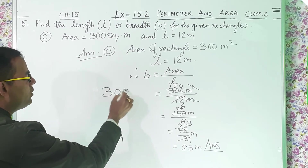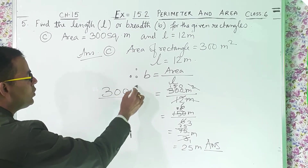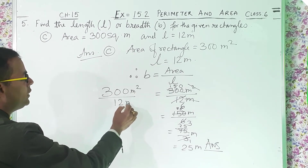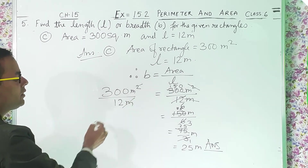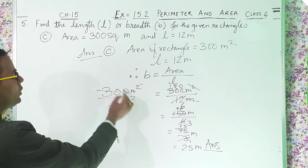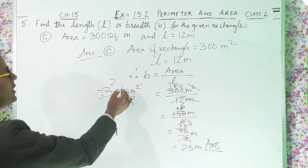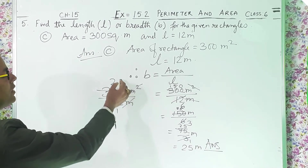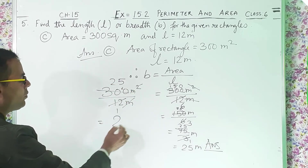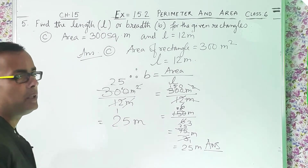You can do it directly also. Those who can do directly, you can do it directly. 300 meter square by 12 meters — meter cancels. 12 ones are 12, 12 twos are 24, 6 left is 60, 12 fives are 60. So from here also you can get 25 meters.